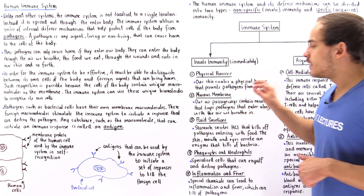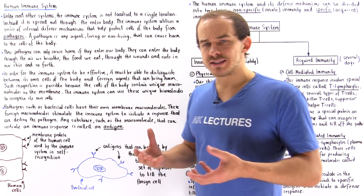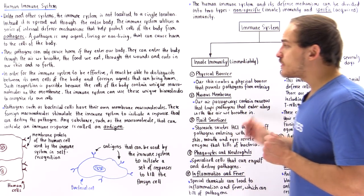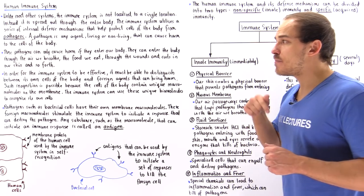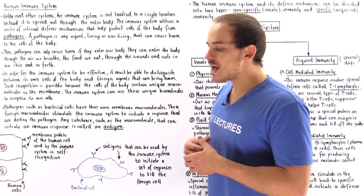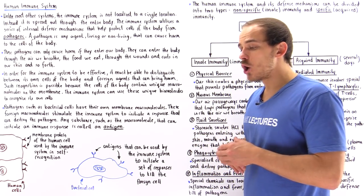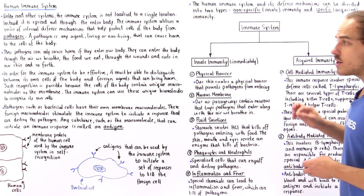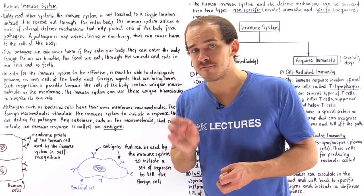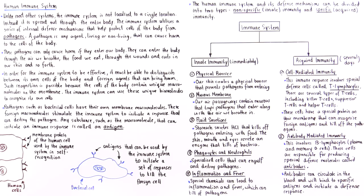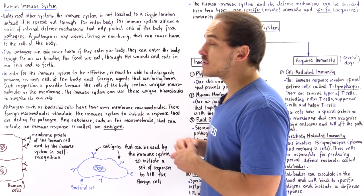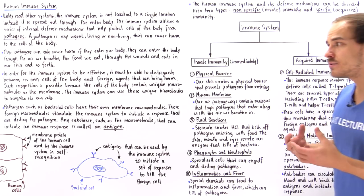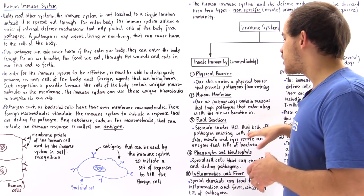That leads us to fluid secretions. If we ingest any type of food that contains a pathogen, or if the pathogens inside the mucous membrane are expelled into our stomach, inside our stomach we have specialized cells known as parietal cells that are responsible for secreting a very acidic substance known as hydrochloric acid. The hydrochloric acid creates a very low pH — a very acidic environment — that most pathogens cannot actually survive in. Additionally, our skin, mouth, and eyes contain special types of glands that secrete fluids containing enzymes such as lysozymes, which can kill off bacterial cell pathogens by breaking down their cell membrane.